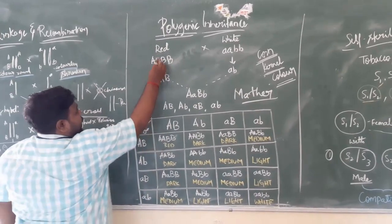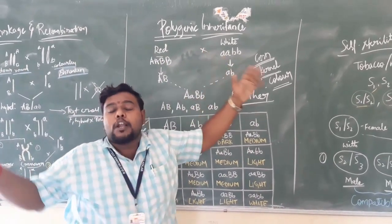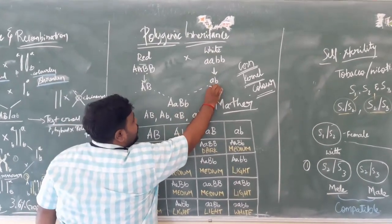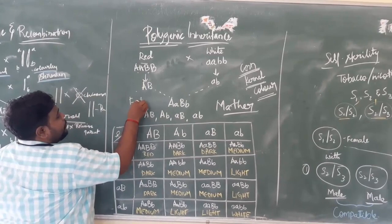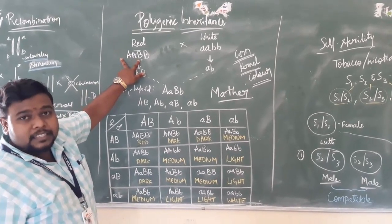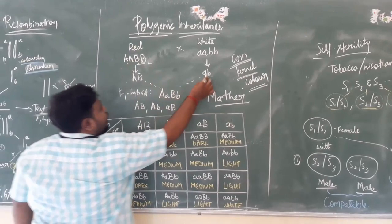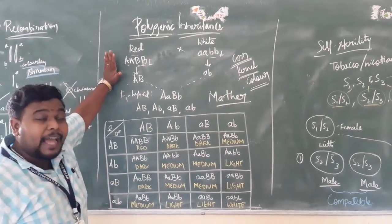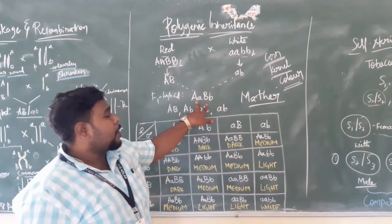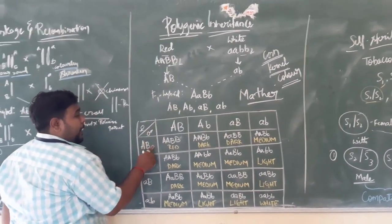In our example, I am crossing one red maize kernel with that of a white maize kernel. These two are two different plants. We are taking the gametes: capital A, capital B from the red one and small a, small b from the white one. We got the F1 hybrid from this cross, which is a dihybrid cross having two characters. We can then put this into a Punnett square to observe the different combinations obtained from the F1 hybrid.